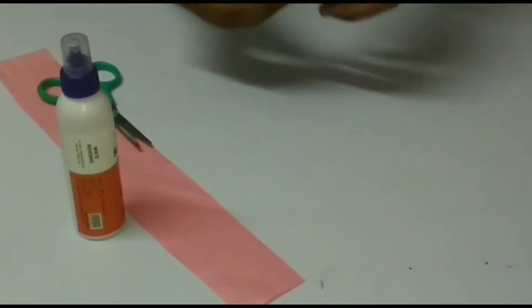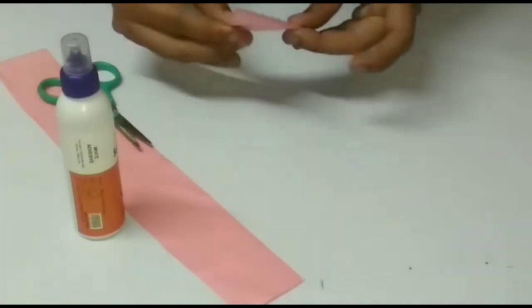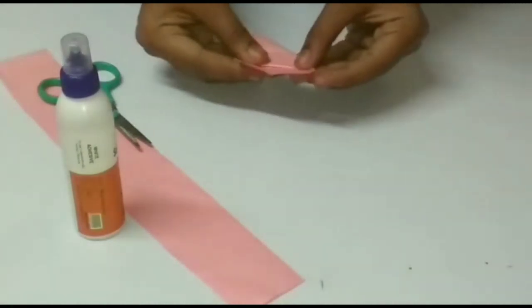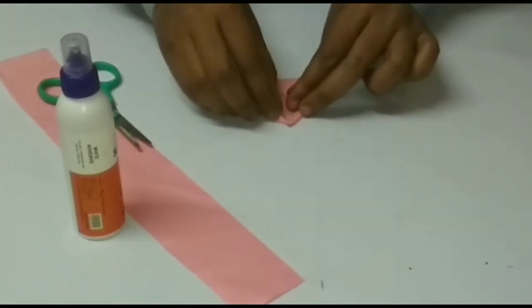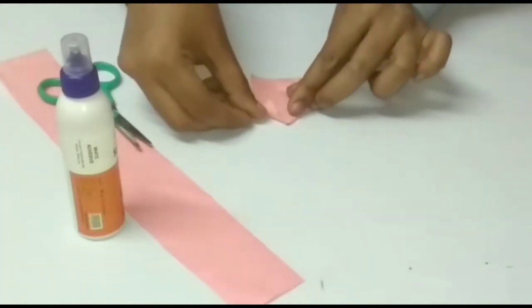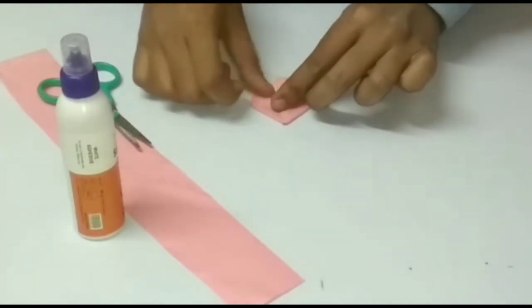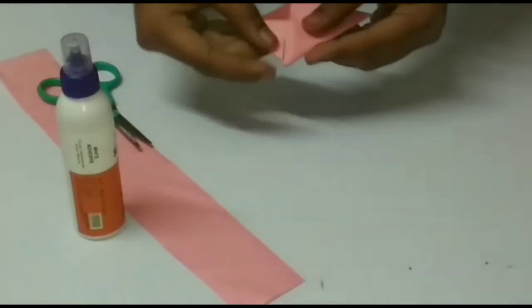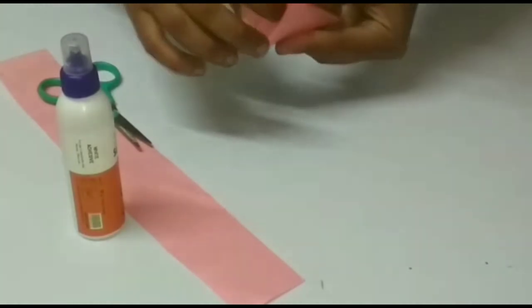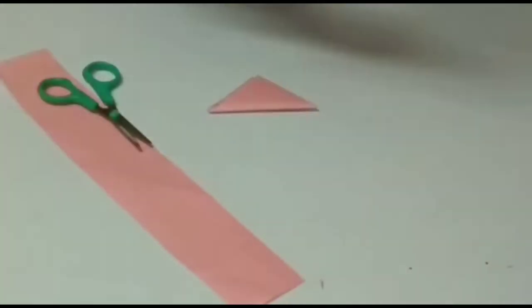Now this will look like this after folding. Now fold the extra part of this sheet like this and put this part into this like this.